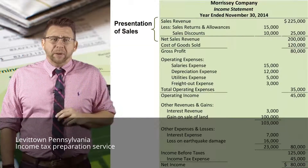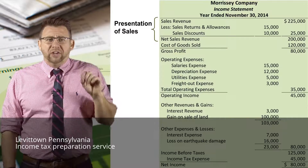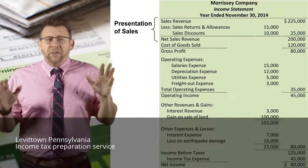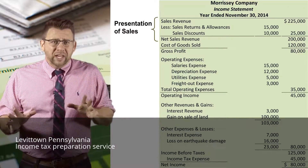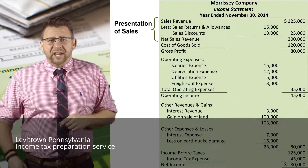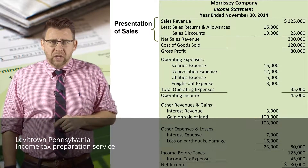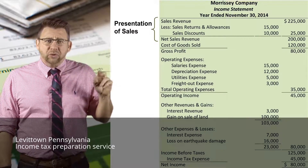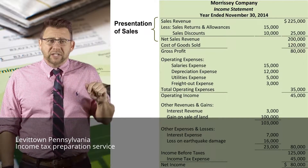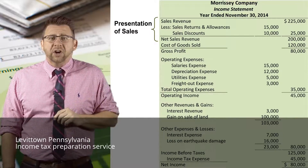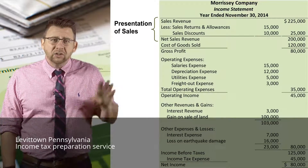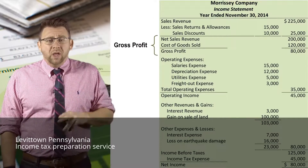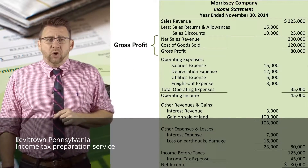The multi-step income statement starts with the calculation of net sales revenue — no other revenue is included in this section. Sales revenue is reported first, then sales returns and allowances and sales discounts are deducted to arrive at net sales revenue.